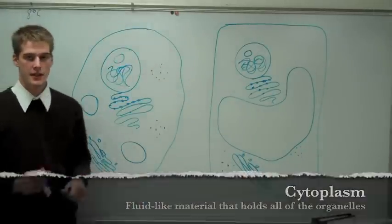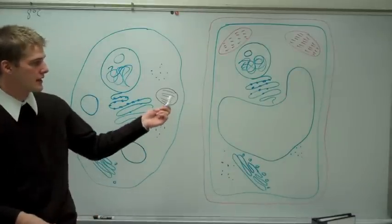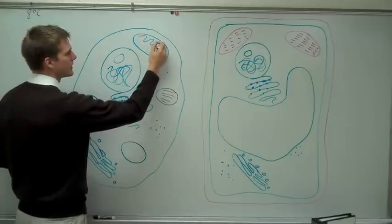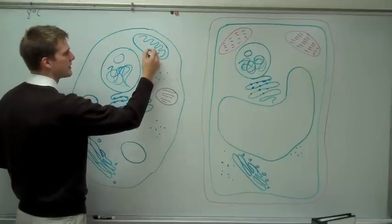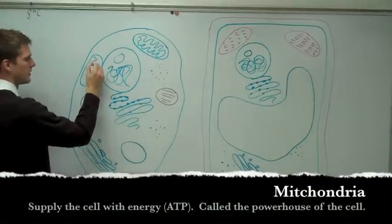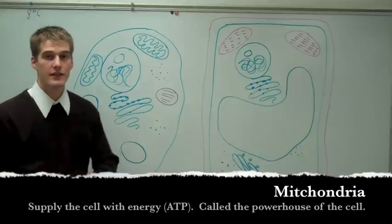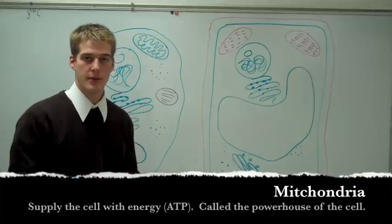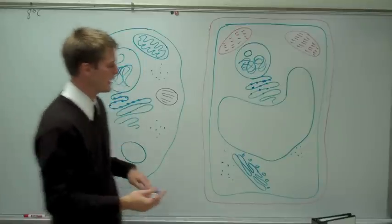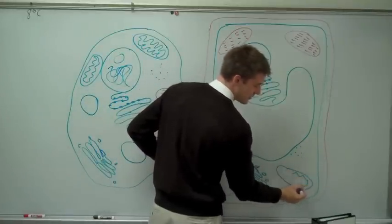The last thing that both cells have is the cytoplasm — cytoplasm is all the white space within the cell. There's one more organelle found in both the plant and the animal cell, and that's the mitochondria. The mitochondria is responsible for producing energy within the cell. There's usually more than one mitochondria so that the cell has enough energy — like if the United States only had one power plant, it wouldn't survive. Mitochondria are found in both plants and animals.